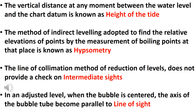The line of collimation method of reduction of levels is designed to provide a check on intermediate sights. This method is also called the rise and fall method. The line of collimation method is also called the height of instrument method.